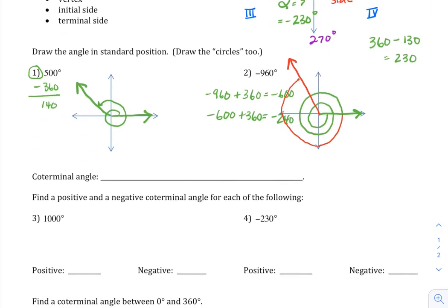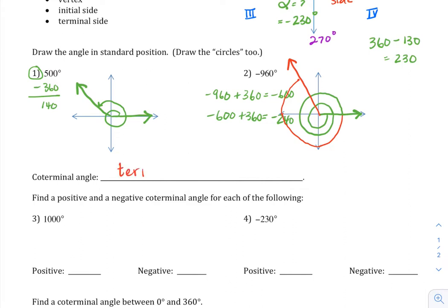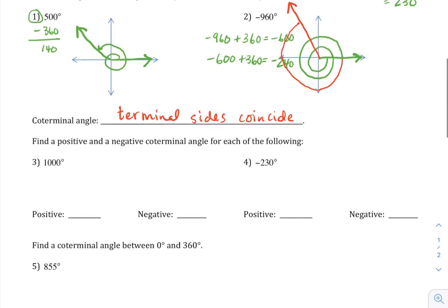All right, coterminal angles are angles that have the same terminal side. Or you can say the terminal sides coincide. Coincide means that they're the same, right on top of each other. So using this information, we want to find coterminal angles.